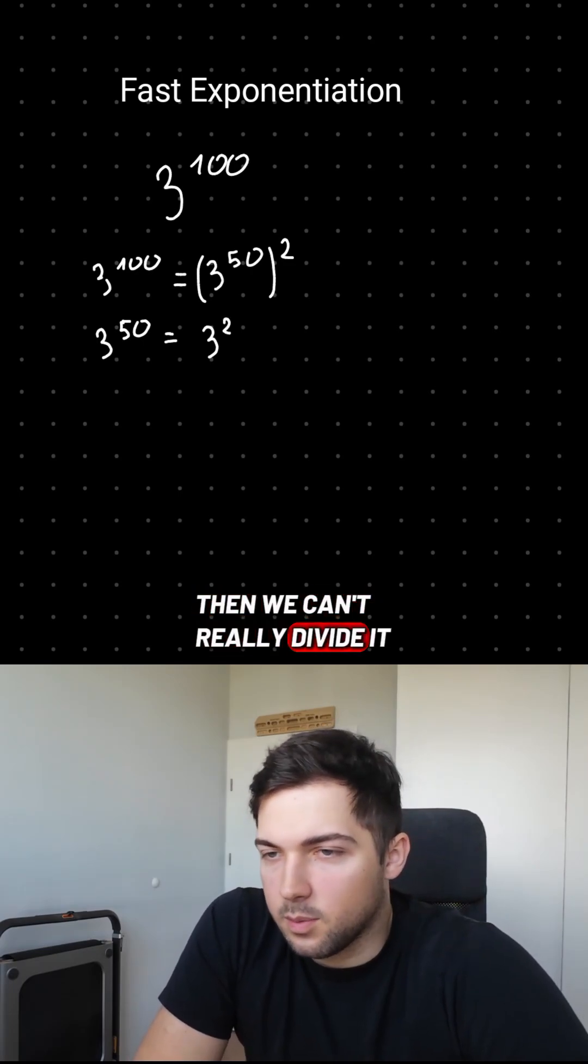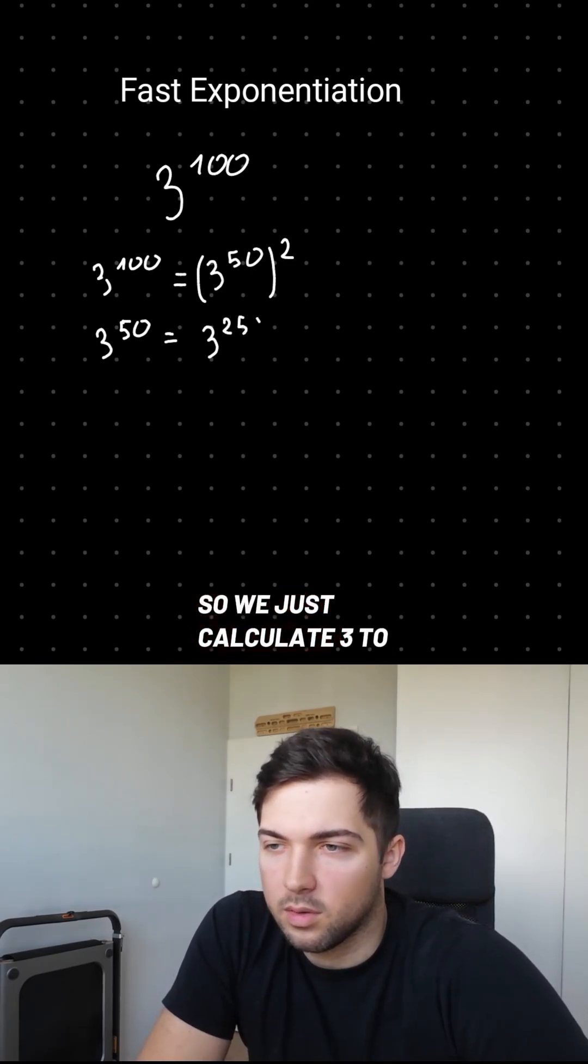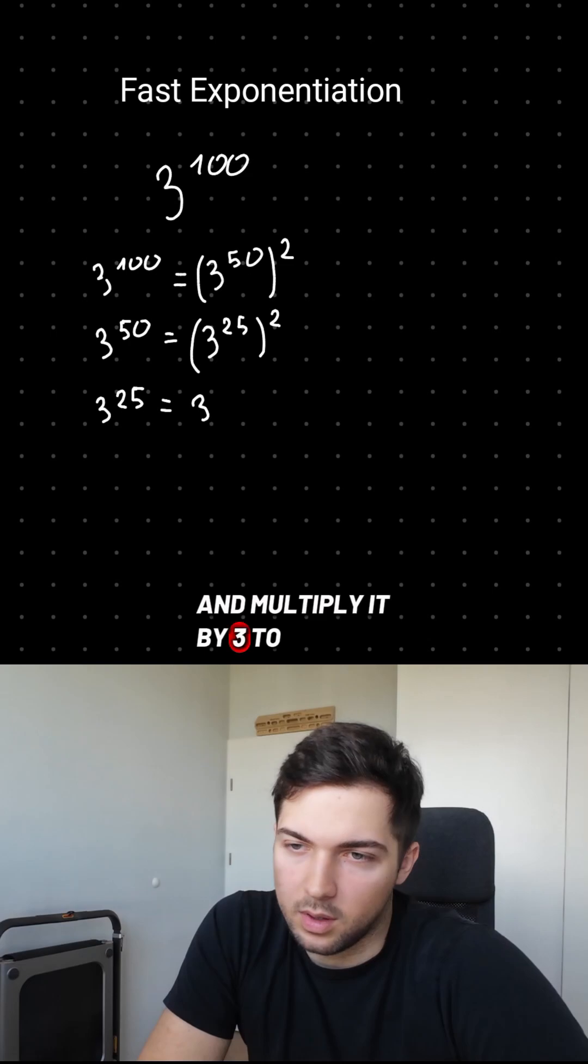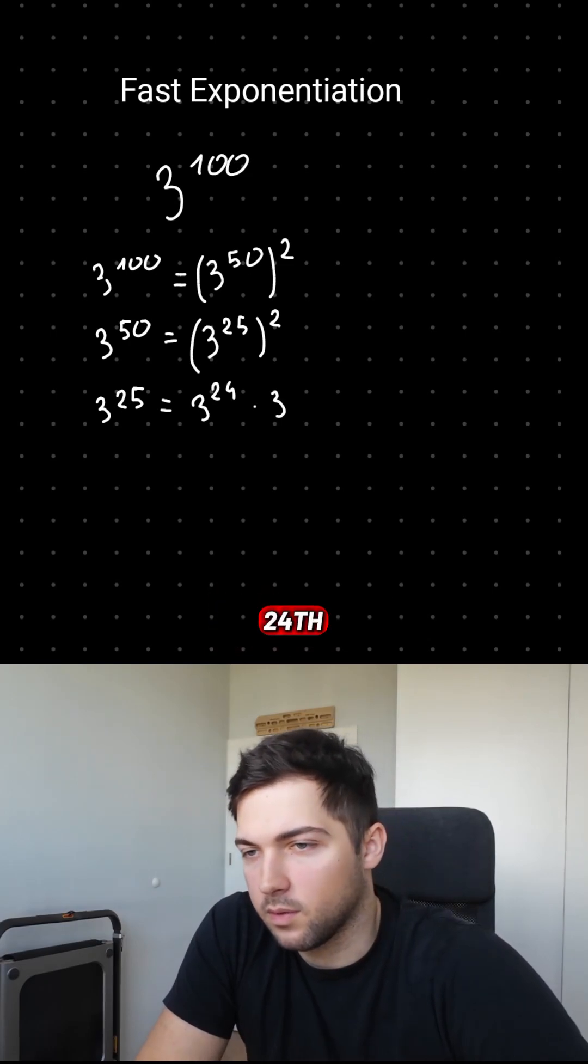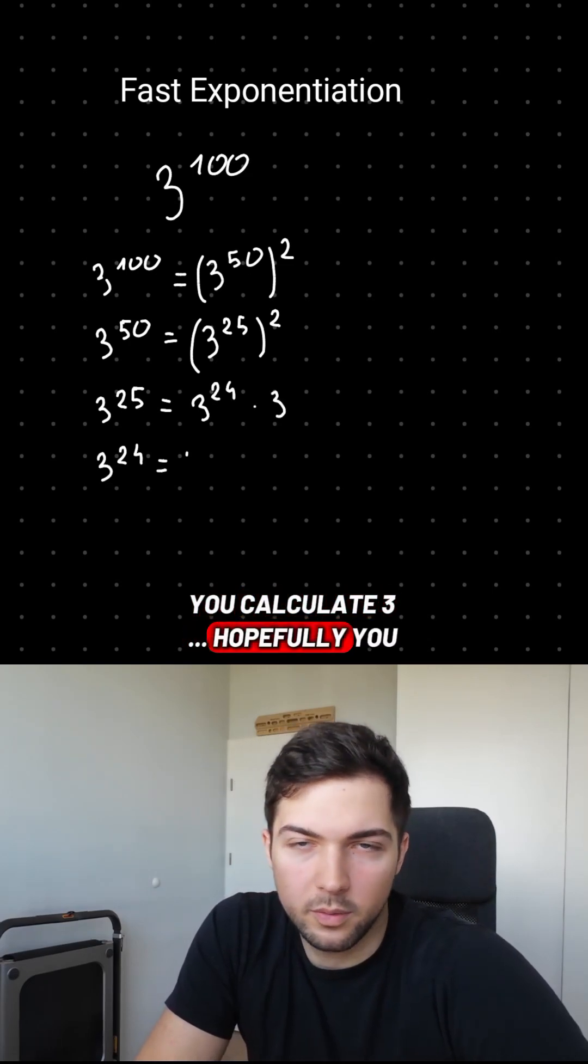Then we can't really divide it by 2, so we just calculate 3 to the power of 24 and multiply it by 3. To get 3 to the power of 24, you calculate 3, hopefully you get the idea.